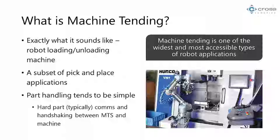The hard part tends to be communicating between machines and robots. The machine says it's ready for the part to be unloaded, the robot acknowledges — all those little signals and handshakes that happen tend to be the most involved part of a machine tending application. That's not even considering any custom end effector design that's needed, but that tends to be the first roadblock.